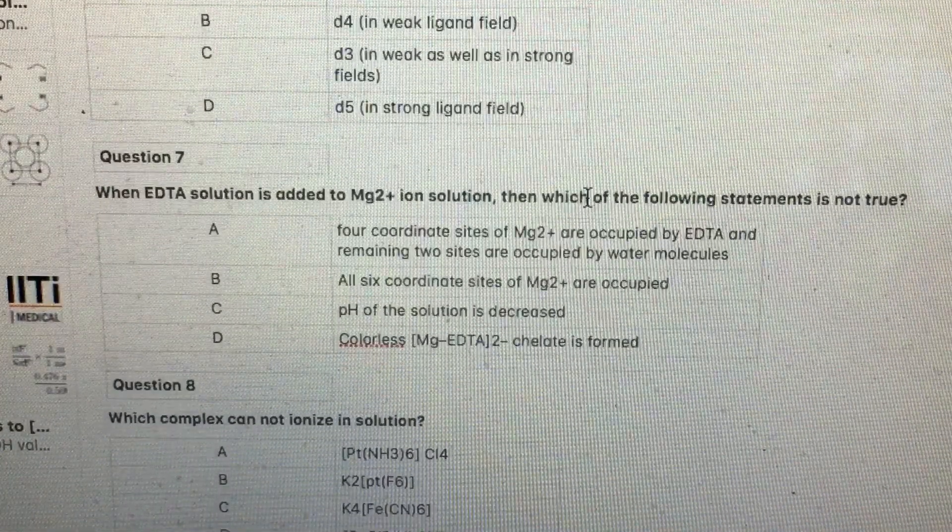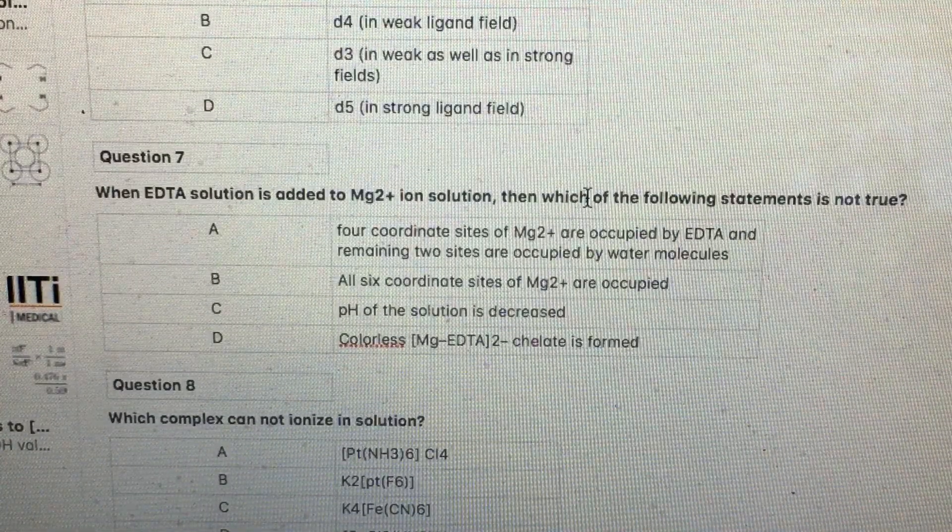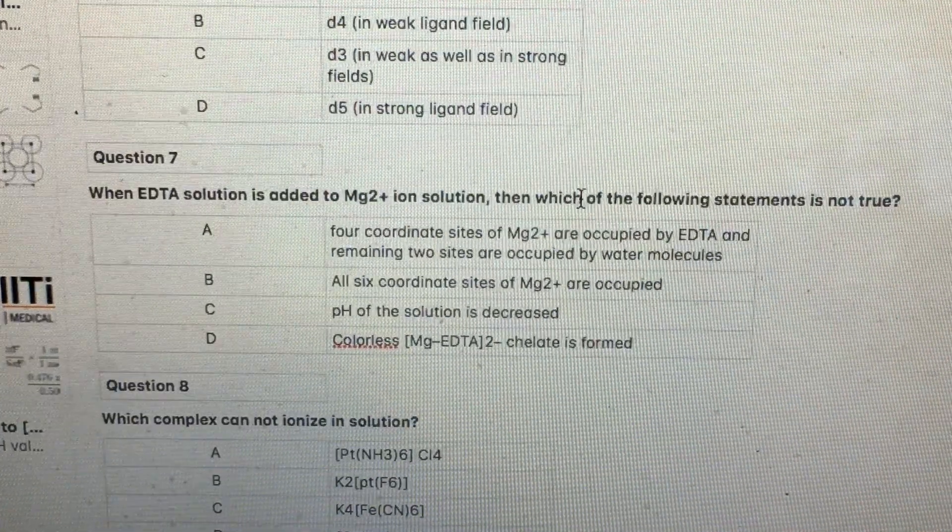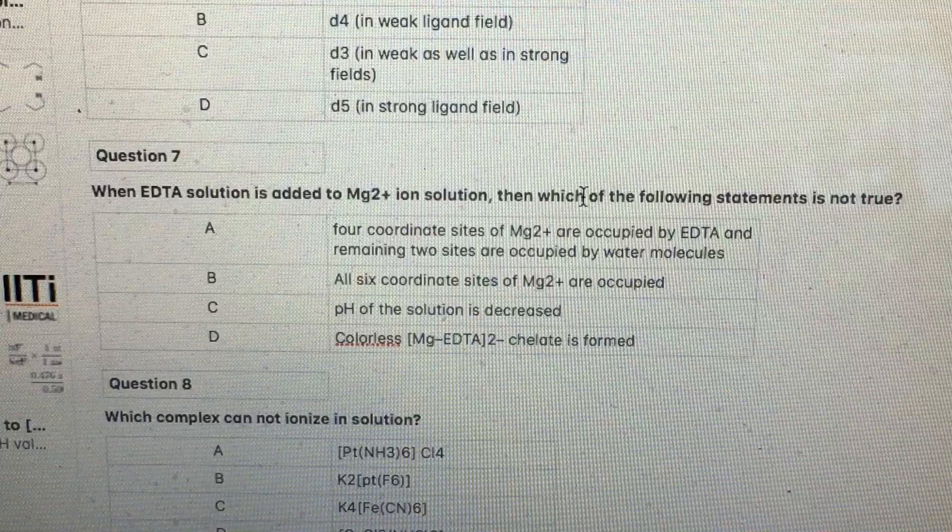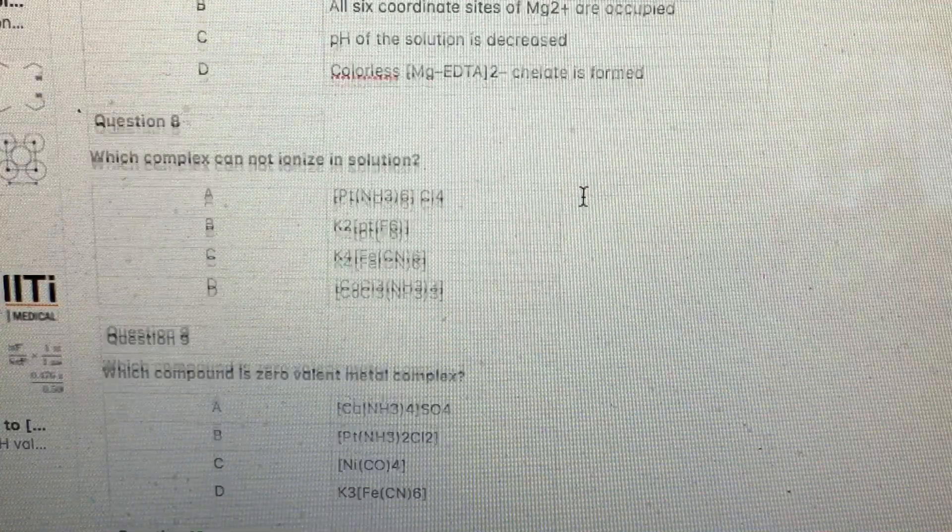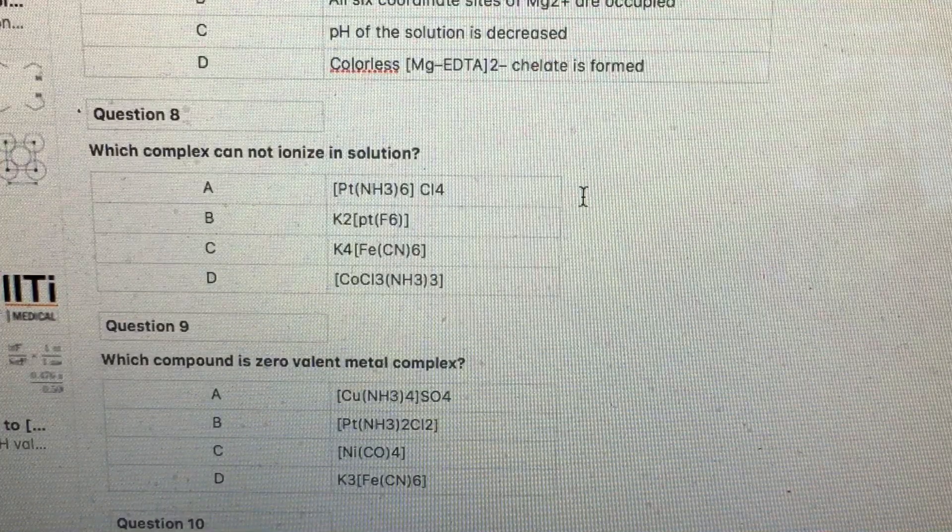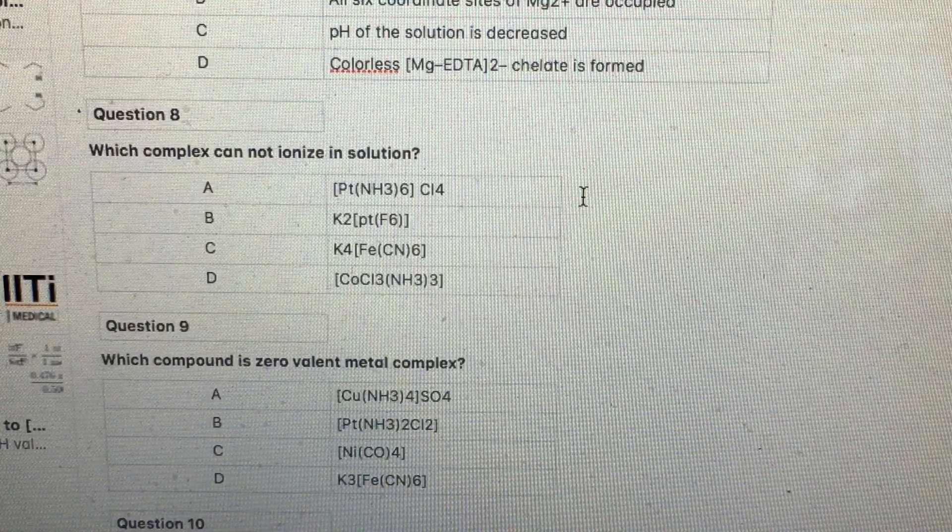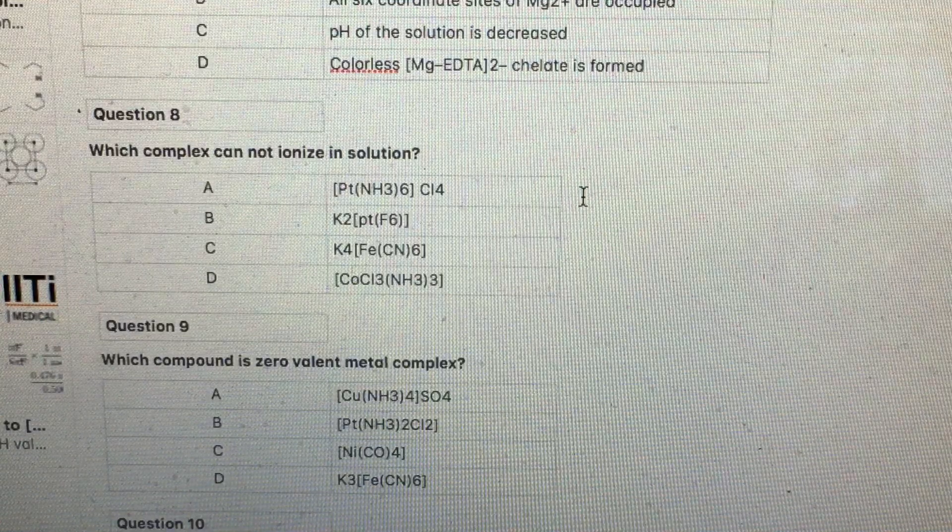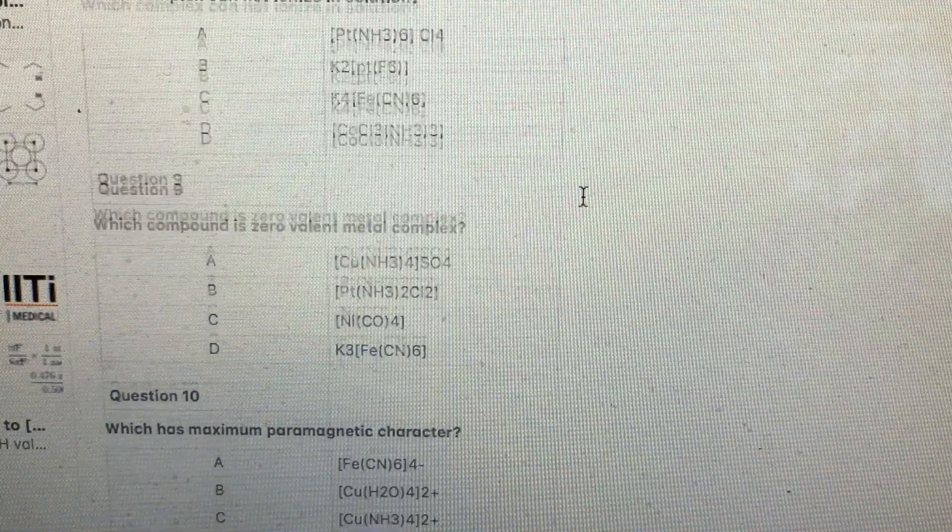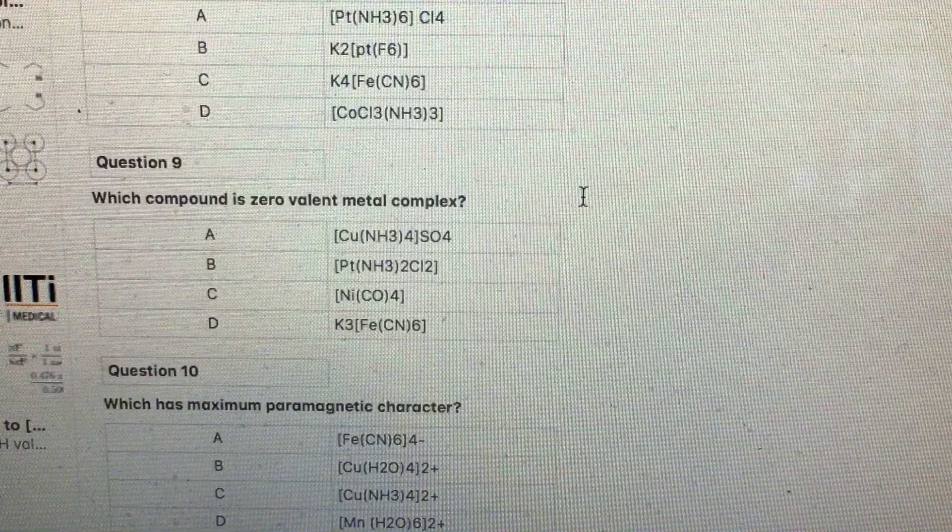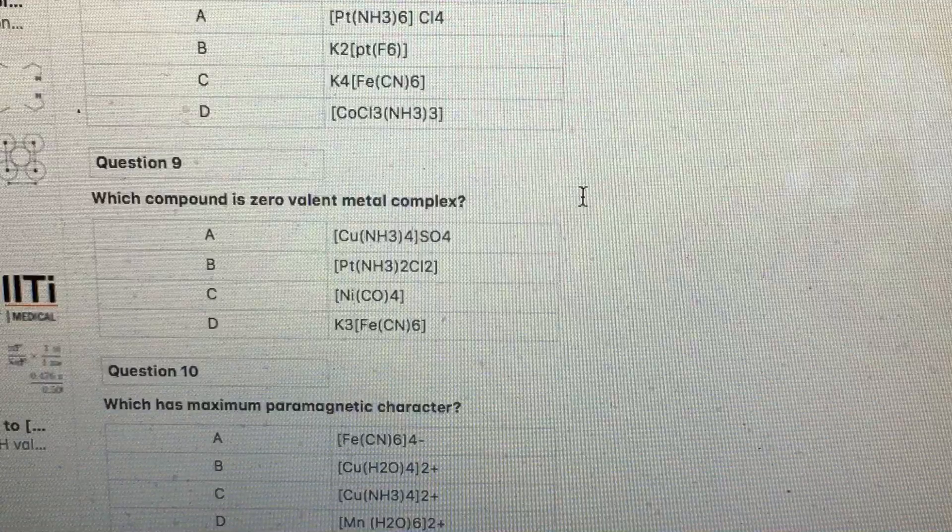Question number 7: EDTA solution is added with Mg2+. It is a hexadentate ligand, chelating agent. All the six secondary valences are satisfied by Mg2+. Answer is B. Which complex cannot ionize in solution? That complex where all the fellows are kept in a square bracket. Obviously D. No ion can come out. It is a non-conductor of current in solution.